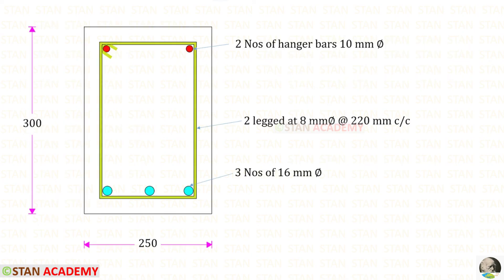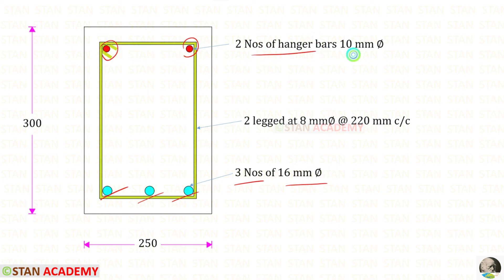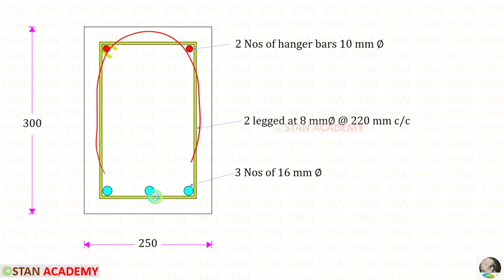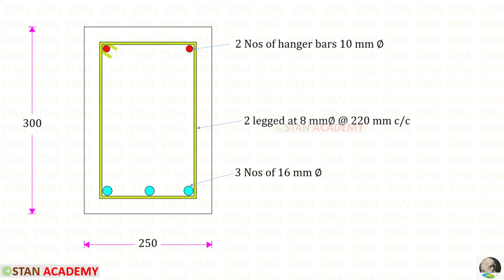Here you can see the cross section. We have provided 3 numbers of tensile bars at 16 mm diameter, 2 numbers of hanger bars at 10 mm diameter, and 2-legged stirrups of 8 mm diameter at 220 mm center to center. Thank you for watching this video.